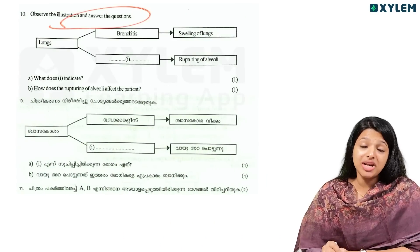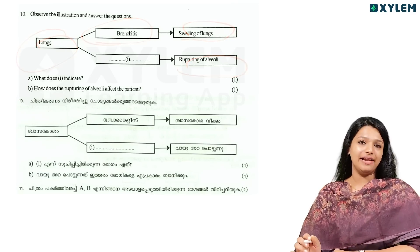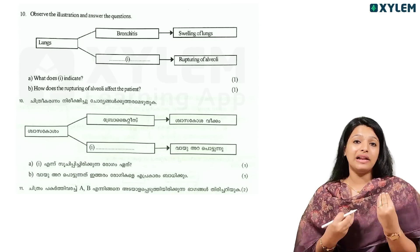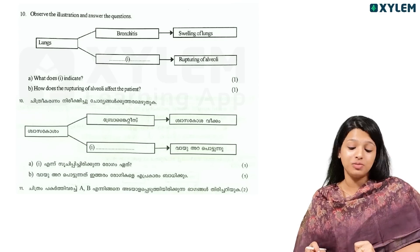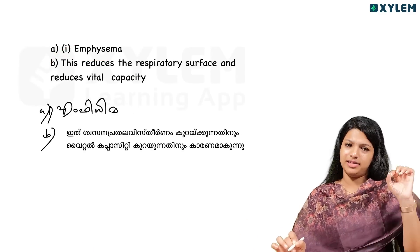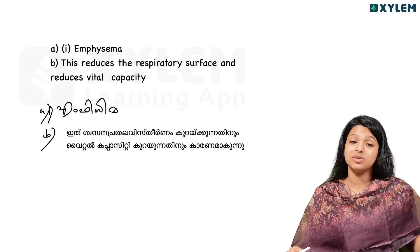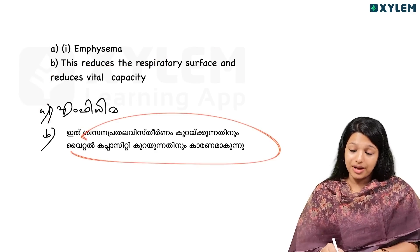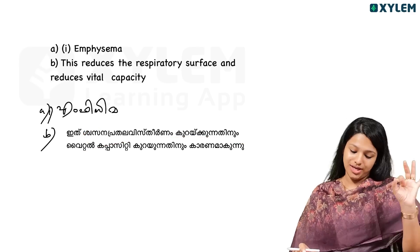Observe the illustration and answer the question. The condition involves lungs, bronchitis, and swelling of the lungs. How does rupturing of alveoli affect the patient? Rupturing of alveoli reduces vital capacity.